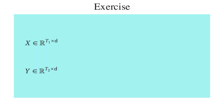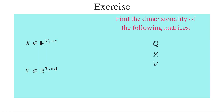I want to finish this video with an exercise. Imagine we have X with dimensionality T1 by d and Y with dimensionality T2 by d, and we want to know the dimensionality of the matrices computed for a single-head cross-attention between X and Y where Y is attending to X. Find the dimensionality of Q, K, V, the compatibility matrix QK-transpose, and the final context matrix Z. I will provide the answer in the description of this video.